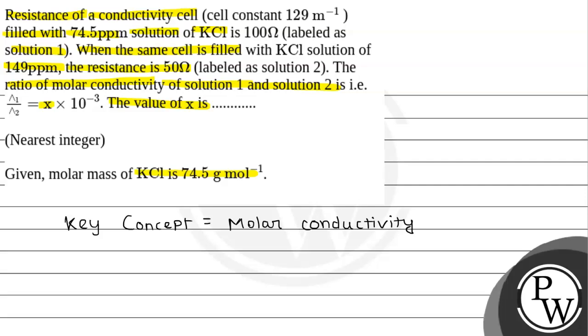First of all, we know that resistance R equals resistivity, that is ρ L/A. Here we have cell constant given as 129 m⁻¹, and resistance is 100Ω, so 100Ω equals ρ multiplied by 129 m⁻¹.